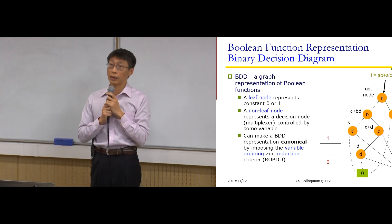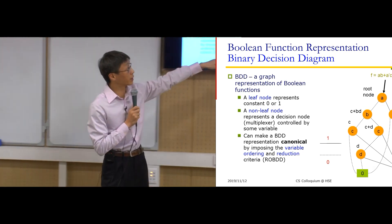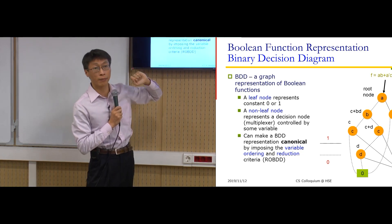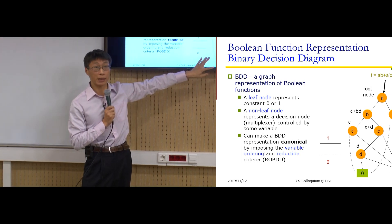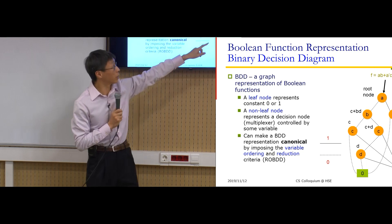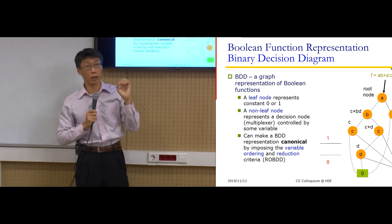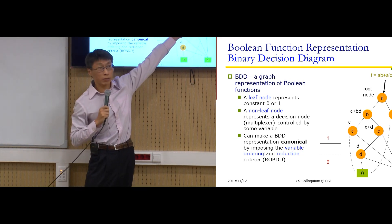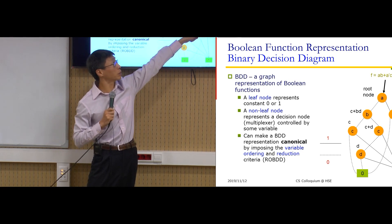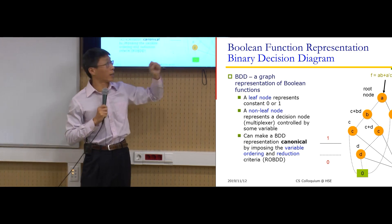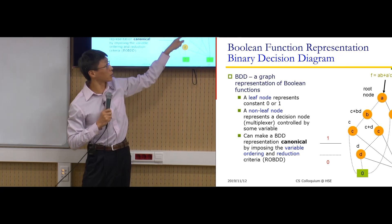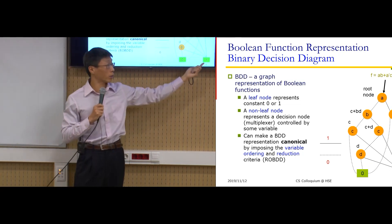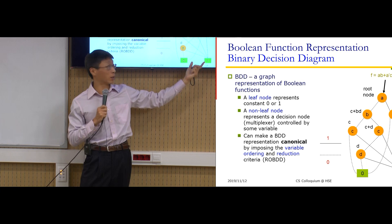BDD is a binary tree. Here is one example: if we have function F = AB + A'C + A'BD, this Boolean function can be represented as a binary tree. Each node is a decision node controlled by a variable. For example, this node is controlled by variable A. If A is zero, we take the left dotted path; if A equals one, we take the right solid path. A path from the root to a leaf node gives the variable assignment, and the terminal node determines whether the output is zero or one under that input assignment.